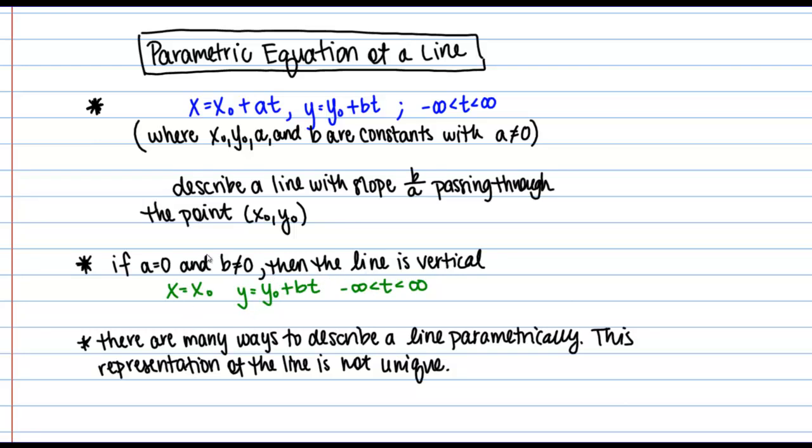How can we understand this? If A equals zero, we get the parametric equations X equals X₀ and Y equals Y₀ plus BT. X equals X₀ is not changing with time—there's no T in the X equation. This is constant, so we're always at the same X value. But Y does change with time. That's a vertical line: a constant X value but different Y values.